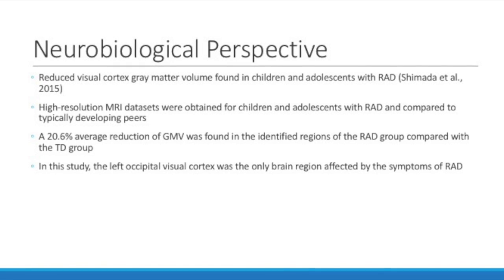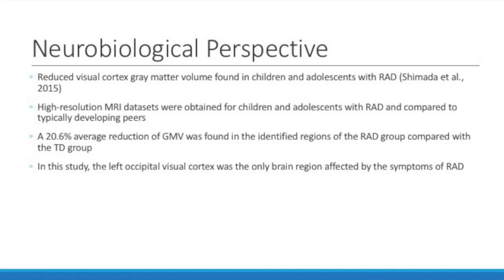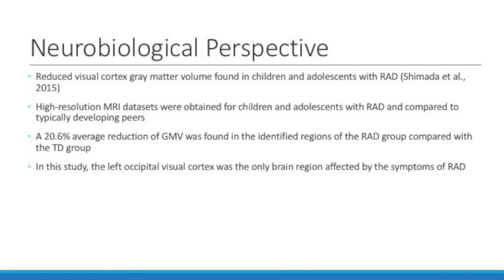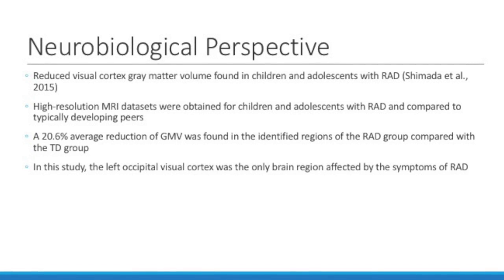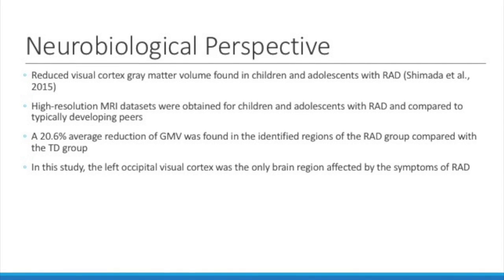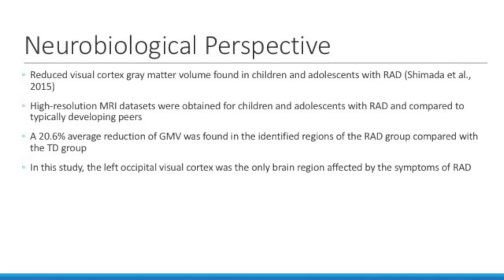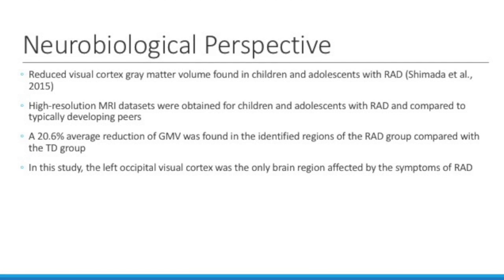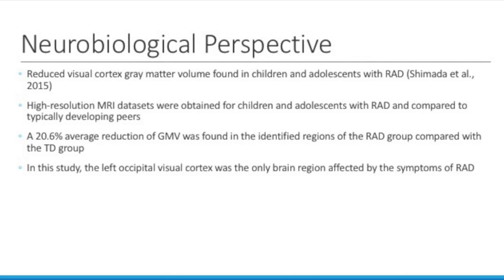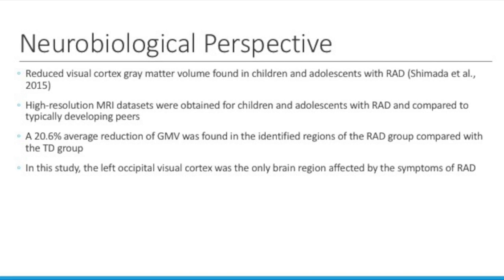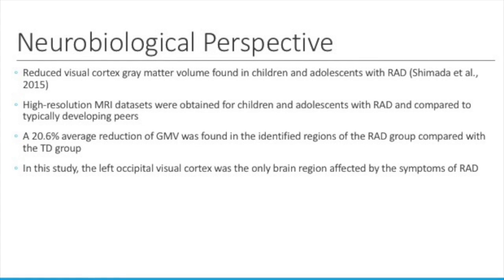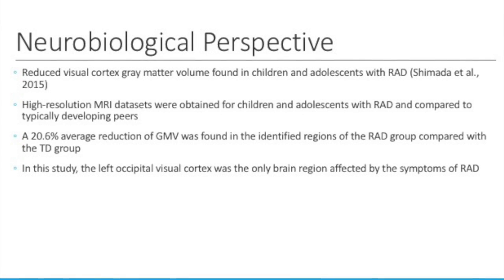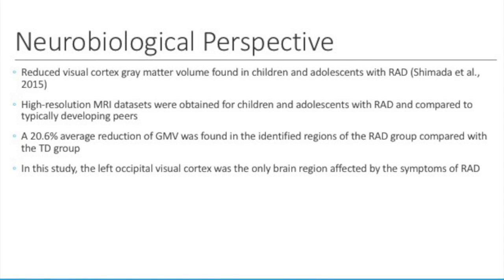Gray matter volume, or GMV, was significantly reduced by 20.6% in the left primary visual cortex, Brodmann's area 17, of the RAD group compared to the typically developing group. This GMV reduction was related to an internalizing problem measured by the Strengths and Difficulties Questionnaire. Combined with previous studies of adults with childhood maltreatment, early adverse experiences such as sensory deprivation may affect the development of the primary visual system, reflecting in the size of the visual cortex in children and adolescents with RAD. These visual cortex GMV abnormalities may also be associated with visual-emotion regulation impairments of RAD, leading to an increased risk for later psychopathology.